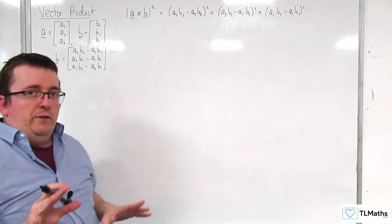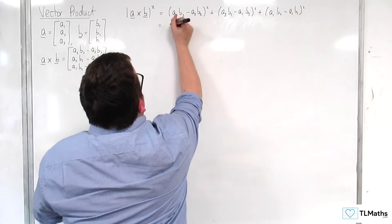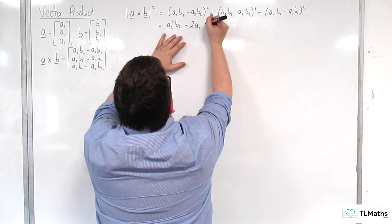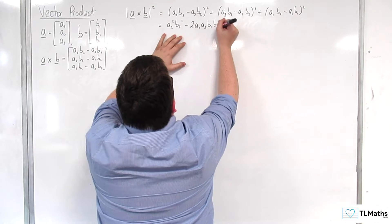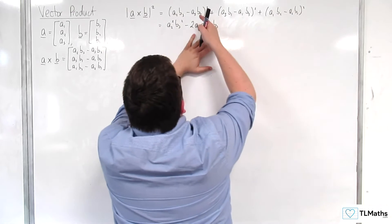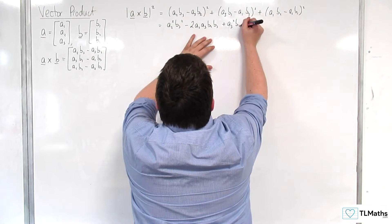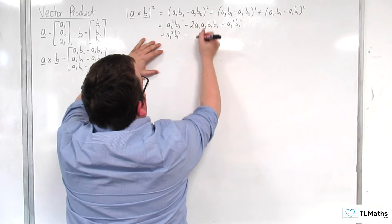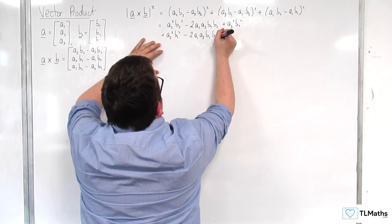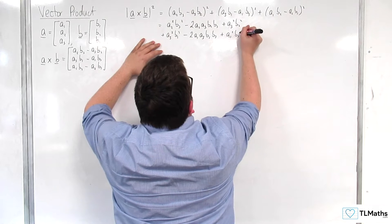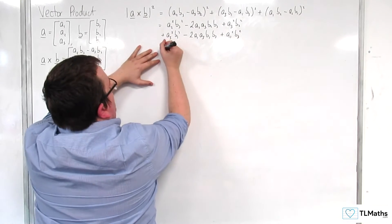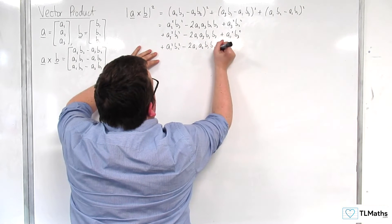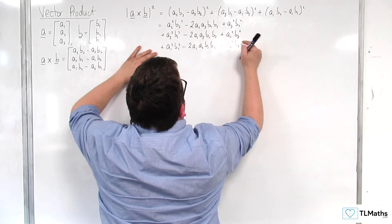The next stage is to expand out these brackets. We have a₂²b₃² − 2a₂a₃b₂b₃ + a₃²b₂², then expanding the second bracket: a₃²b₁² − 2a₁a₃b₁b₃ + a₁²b₃², and the third bracket: a₁²b₂² − 2a₁a₂b₁b₂ + a₂²b₁².